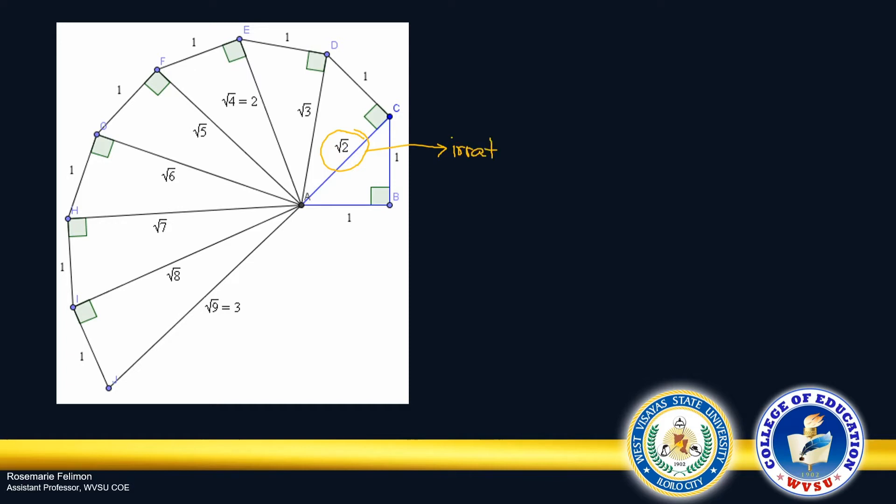Yes, there's a proof for that. You might have encountered a proof in number theory. And so, we cannot find a fraction or a ratio of two integers that will be equal to square root of 2.